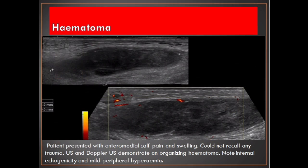Patient presented with anteromedial calf pain and swelling. Could not recall any trauma. Ultrasound and Doppler demonstrate an organizing hematoma. Note internal echogenicity and mild peripheral hyperemia.